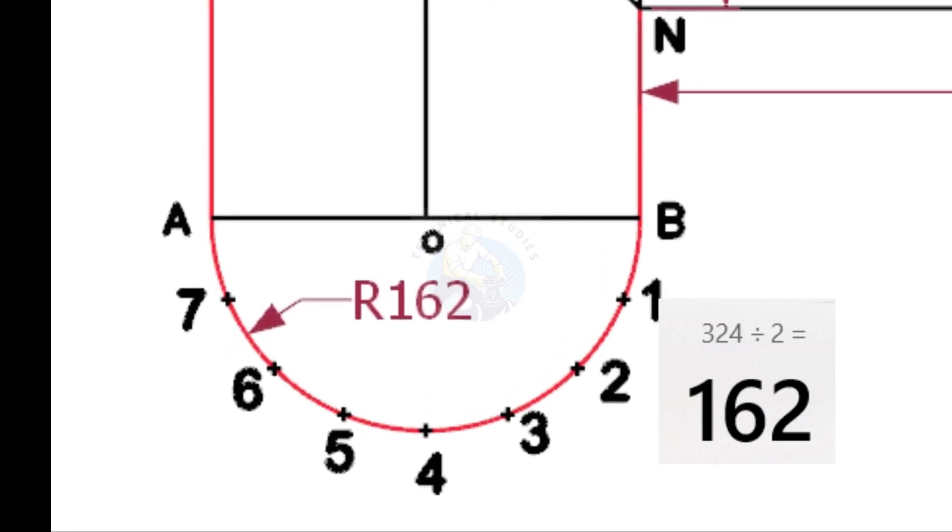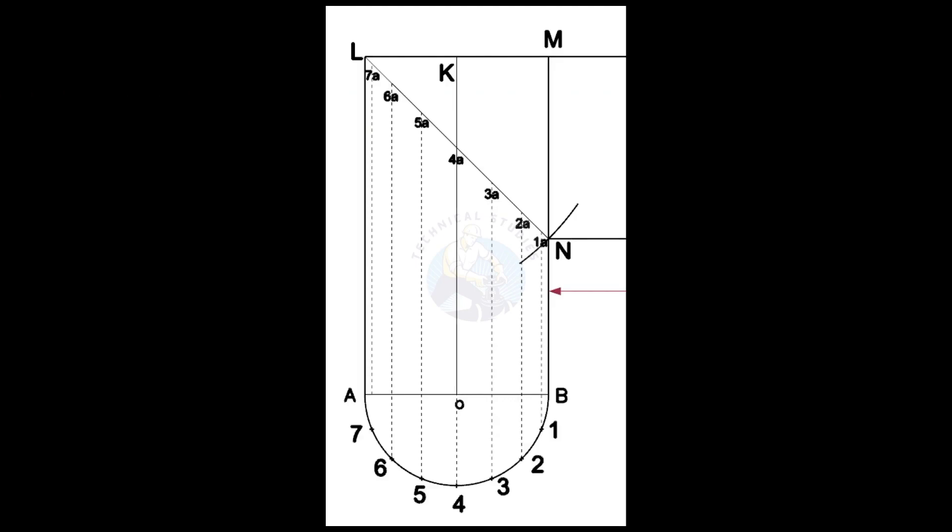Draw a half-circle centering O and divide the circumference into eight equal parts. Draw lines 77A, 66A, etc. intersecting the line LN.